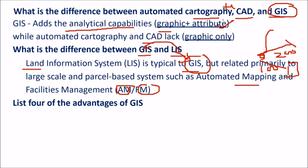GIS is a very vast and huge subject. It provides huge facilities right from the inception — grabbing of data till storing, displaying, and analysis. Now we have web-based systems also. LIS is only related to large scale and parcel-based systems such as automated mapping and facilities management, though these are part of GIS too. LIS specifically deals with AM and FM.